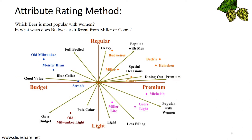For the attribute rating method, let's take a look at this octopus-looking map, which can be interpreted as follows. Arrows indicate the direction in which the attribute is increasing, and the length of the line — the longer the line, the greater the importance of that attribute. You can draw an imaginary perpendicular line to compare. So let's look at two questions: which beer is most popular with women? The answer is Mecklo. Second, in what ways does Budweiser differ from Miller's and Coors? The answer is: more popular with men, heavier, and less preferred for special occasions.